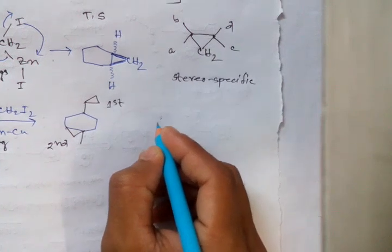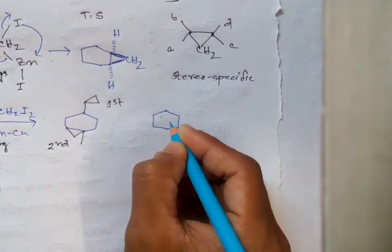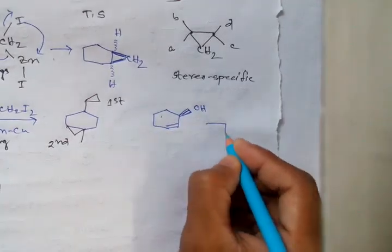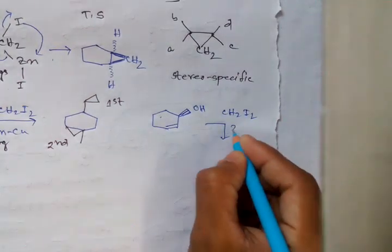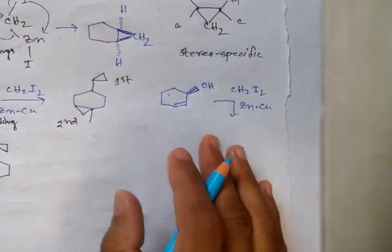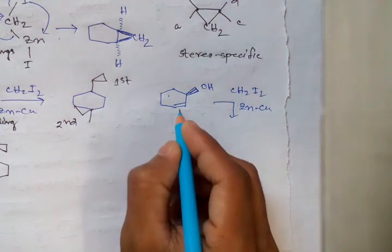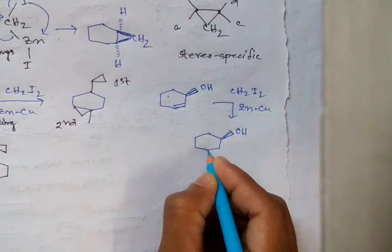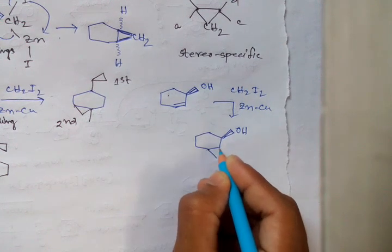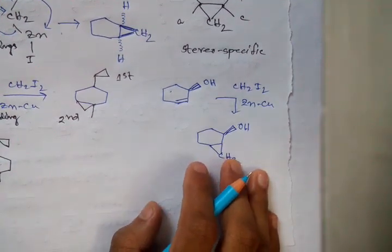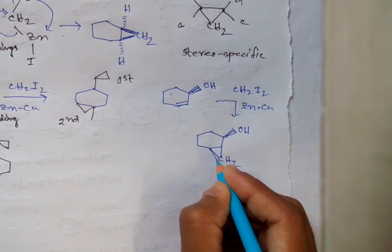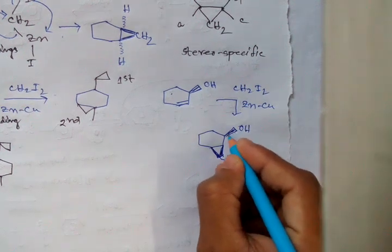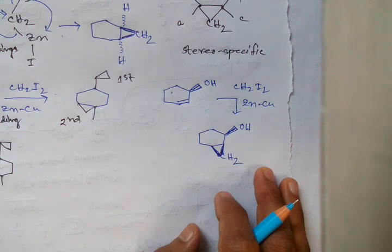Now if the system is like this and it is treated with the same reagent CH₂I₂ and zinc-copper couple, there is also addition of the CH₂ group. The addition of this CH₂ is a cis addition, so the product has cis stereochemistry — it is a cis addition.